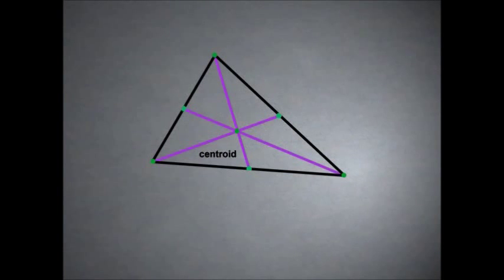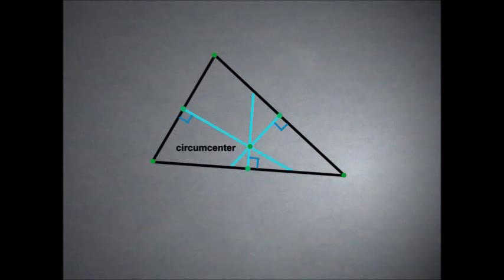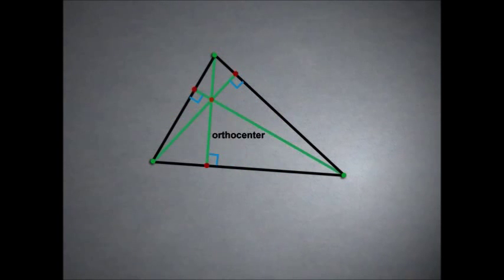What we've done so far is isolated four centers for a triangle. One is the centroid — that was the point where the medians met. The median was the line that went from each vertex to the center of the opposite side. The point where the bisectors of each of the three angles meet was called the incenter. The point where the perpendicular bisectors of the three sides met was called the circumcenter. And the point where the three altitudes all met is called the orthocenter.